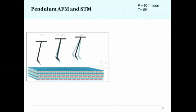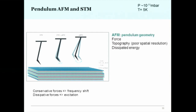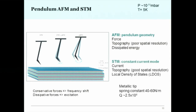To summarize the technique: in AFM pendulum mode with amplitude around 3 nanometers, I obtain force information, topography at poor spatial resolution, and dissipated energy. Switching to STM mode with a metallic tip and current feedback, I get topography at good spatial resolution and local density of states. By combining both — using current feedback to get closer and oscillating just enough for a dissipation signal — I can obtain both electronic information from the current and dissipation information simultaneously.